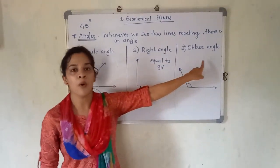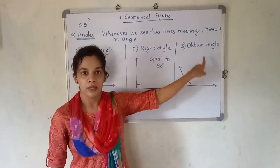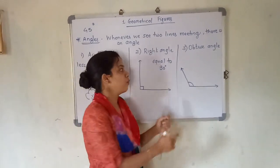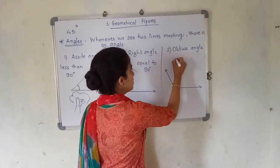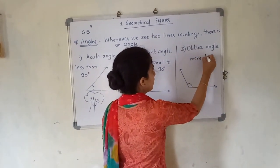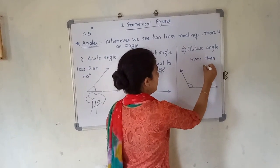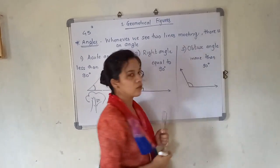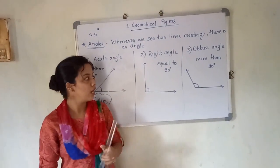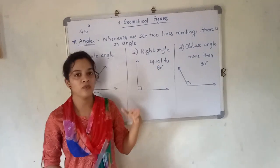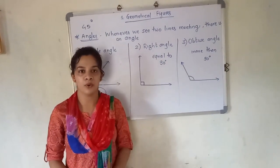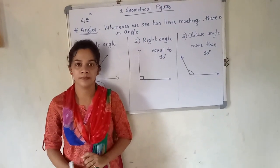The next part is the obtuse angle. Obtuse angle means the angle which measures more than 90 degrees. So what is an obtuse angle? It is the angle which is more than 90 degrees.